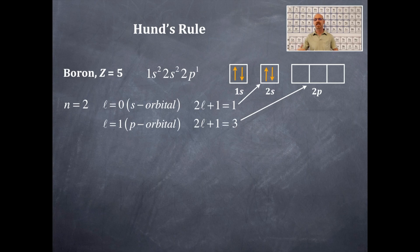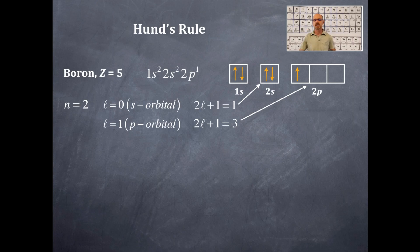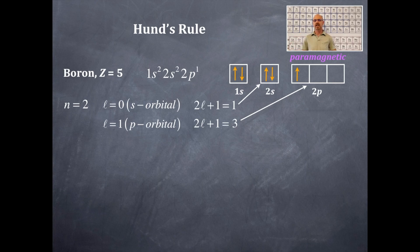Beryllium has atomic number 4. The next electron goes into the first box of the 2p orbitals. Notice that spins are anti-parallel within each orbital — first arrow up, second arrow down, by convention. Boron has one unpaired electron in the 2p orbital, which makes it paramagnetic — attracted to a magnetic field.